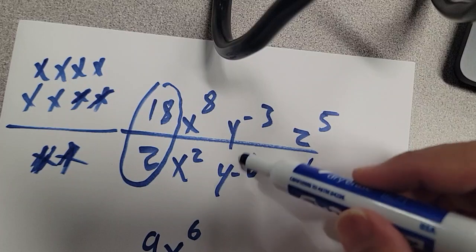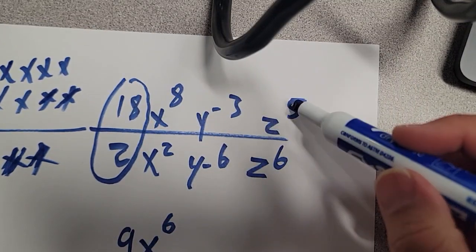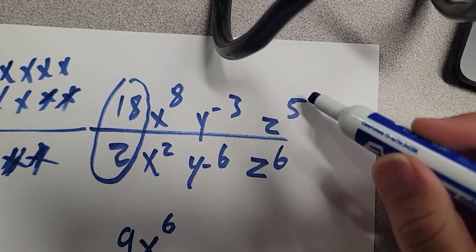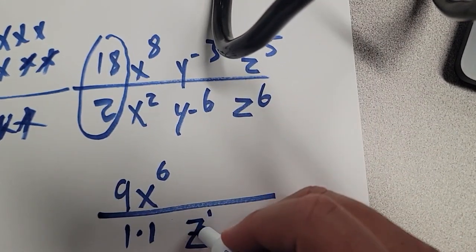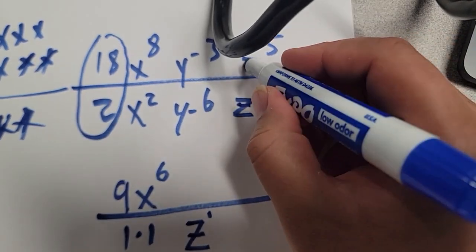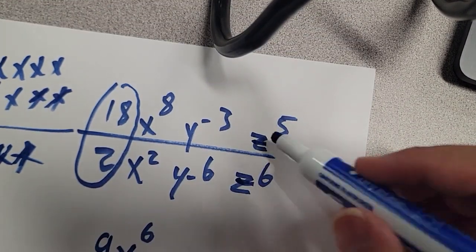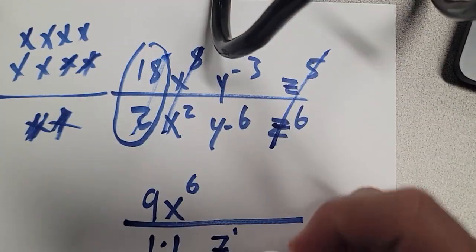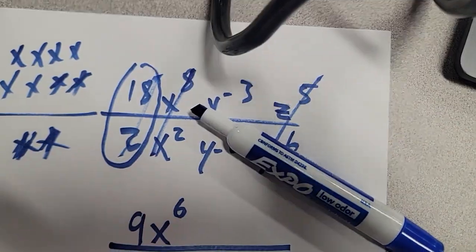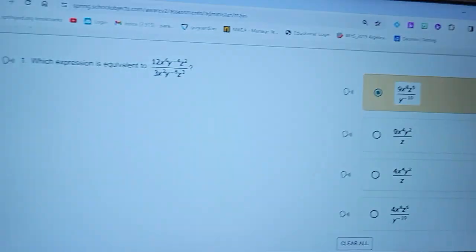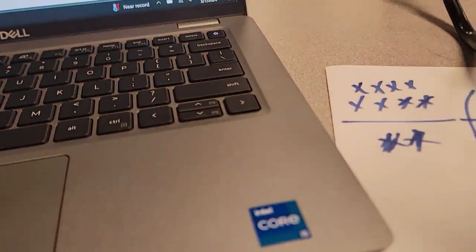Now we have negatives here, but let's do the positives first. I have 5 z's and 6 z's — who has more, the top or the bottom? There are 5 on the top and 6 on the bottom, so the bottom has more, leaving z to the 1st on the bottom. We don't write down the 1 exponent but I'll show it so you can see. We're done with x's and z's. On your problem, the y's won't be needed — just use x's and z's to identify the answer.